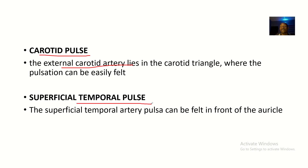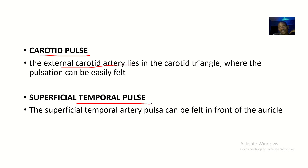The superficial temporal pulse comes from the superficial temporal artery, which is a branch of the external carotid artery. The superficial temporal artery pulse can be felt in the front of the auricle — right in front of your ear.